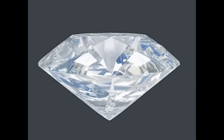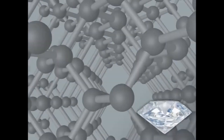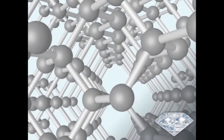Diamond is the hardest mineral on Earth, with a hardness of 10 on the Mohs hardness scale. Diamond is composed of only one element — carbon. If you could zoom in, you'd see carbon atoms interlocking and connected to one another in a very strong bond — this is what makes diamond such a hard mineral.